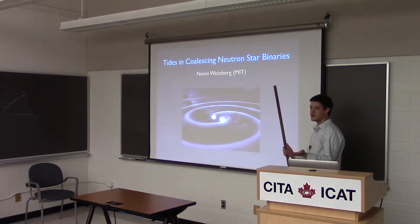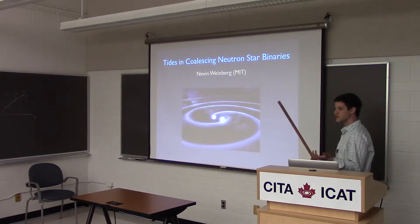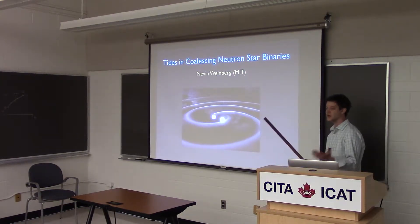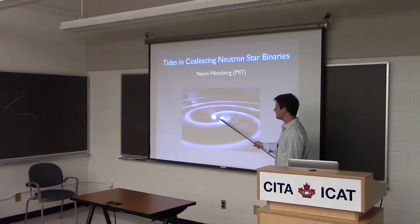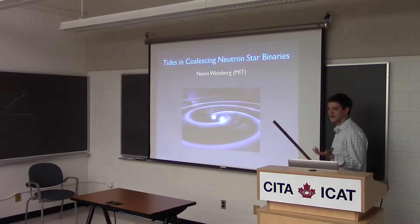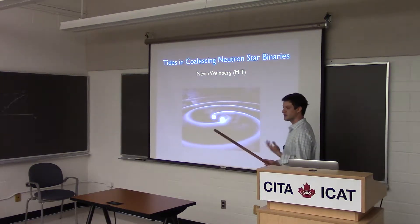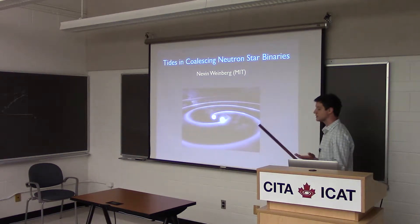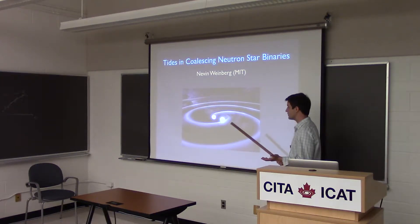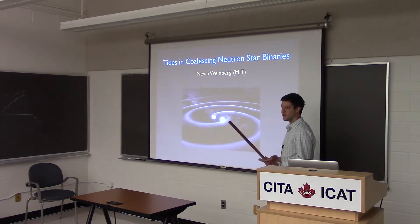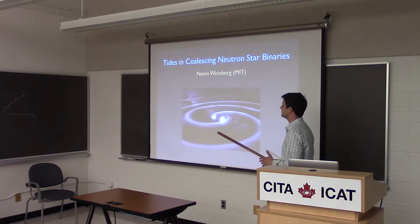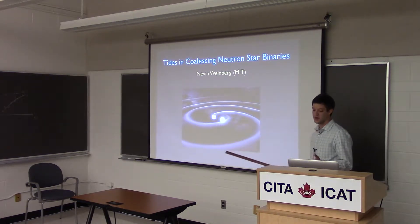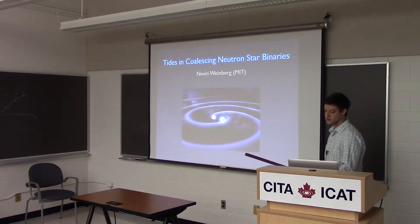To first approximation, you can treat the two neutron stars as point masses to calculate the orbital decay rate, and you do pretty well. But neutron stars are not point masses — they have finite size, so there are also tidal interactions that remove energy and angular momentum from the orbit and modify the inspiral rate.